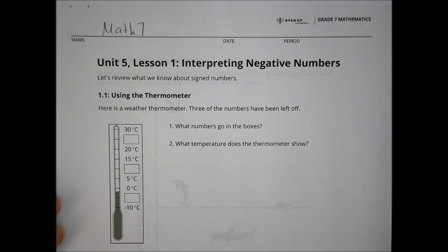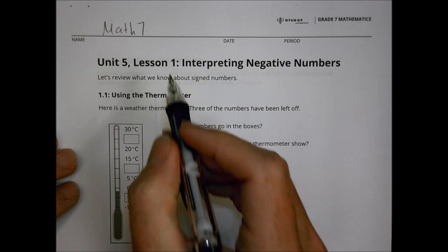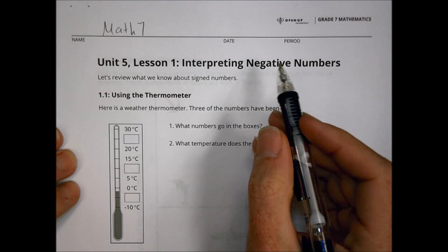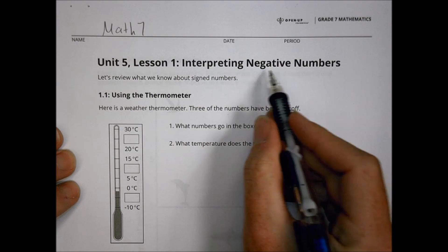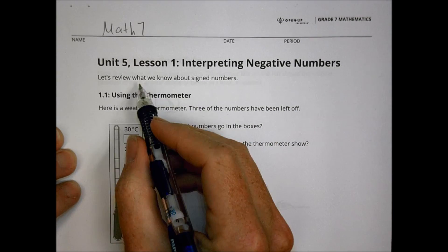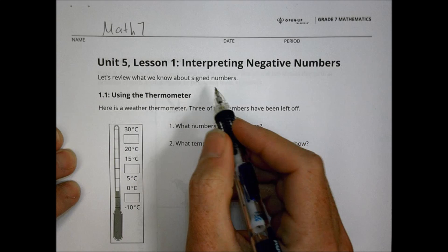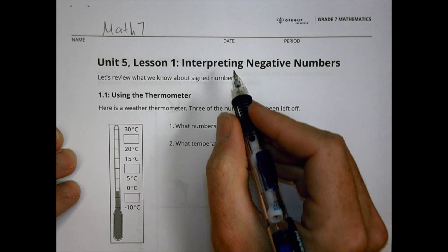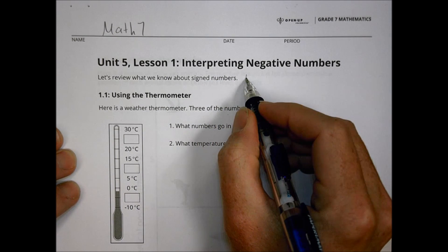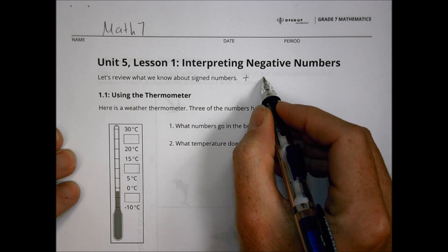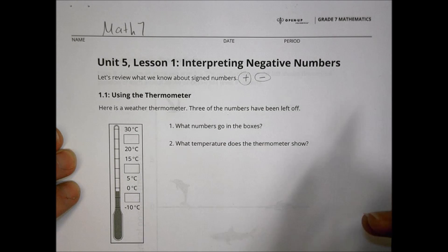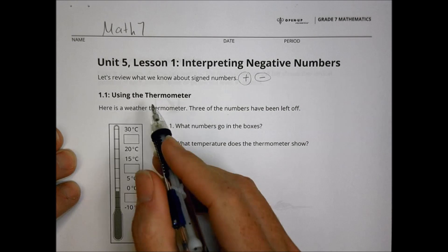Hey there, this is Math 7, Unit 5, Lesson 1. We're looking at today interpreting negative numbers. We're going to review a little bit about what we know about signed numbers, meaning the difference between positive and negative numbers today.